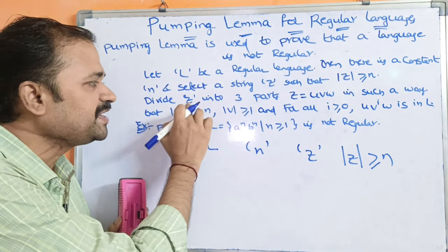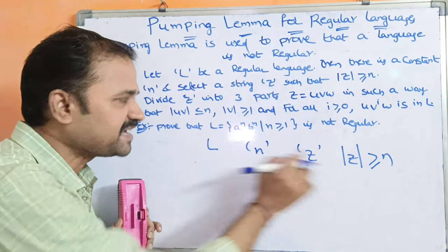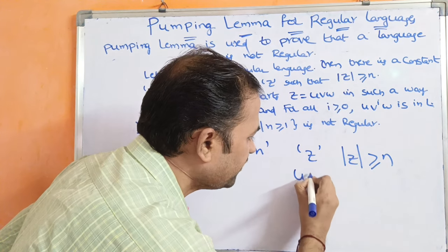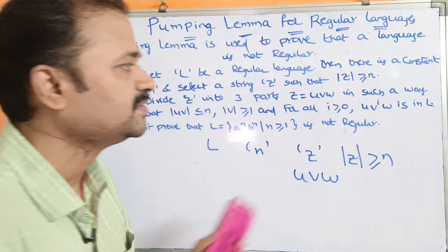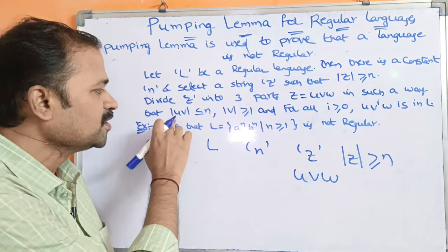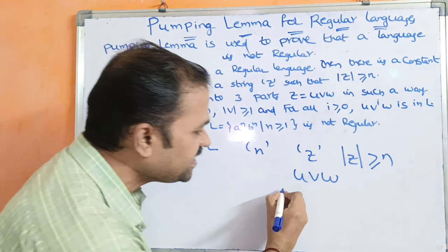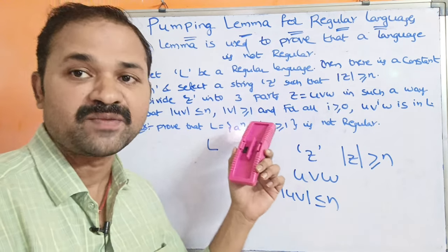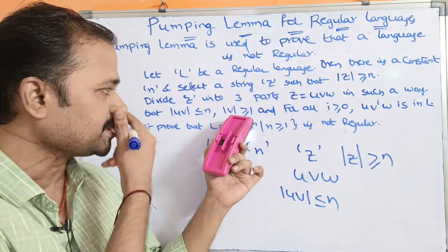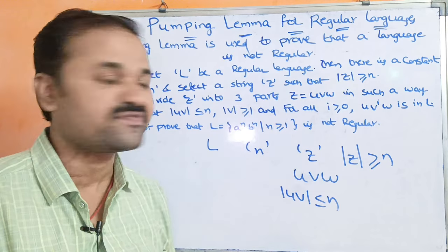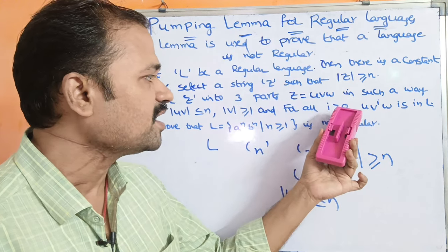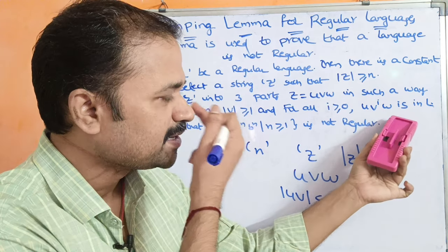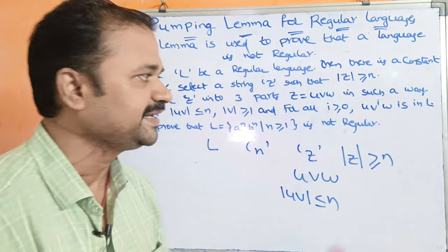Then we have to divide Z — the given string — into three parts: Z = UVW, in such a way that |UV| is less than or equal to N, and |V| is greater than or equal to 1. And for all i greater than or equal to 0, UV^i W is in L.